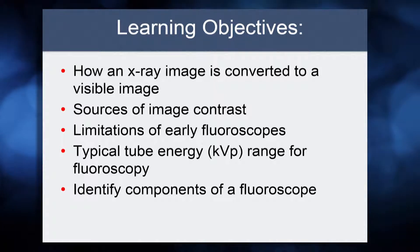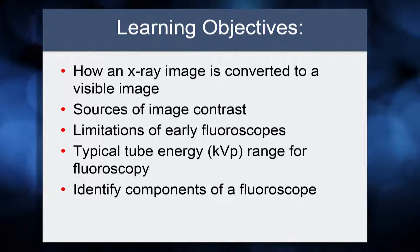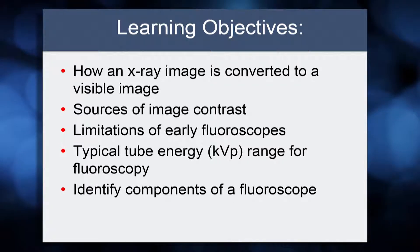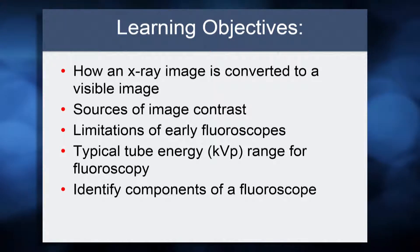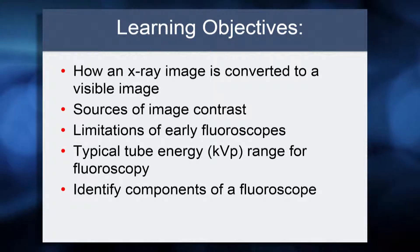What causes image contrast? On an image, why are some areas dark and why are some areas light? What are the limitations of early fluoroscopes — what were the problems, and what improvements needed to be made?